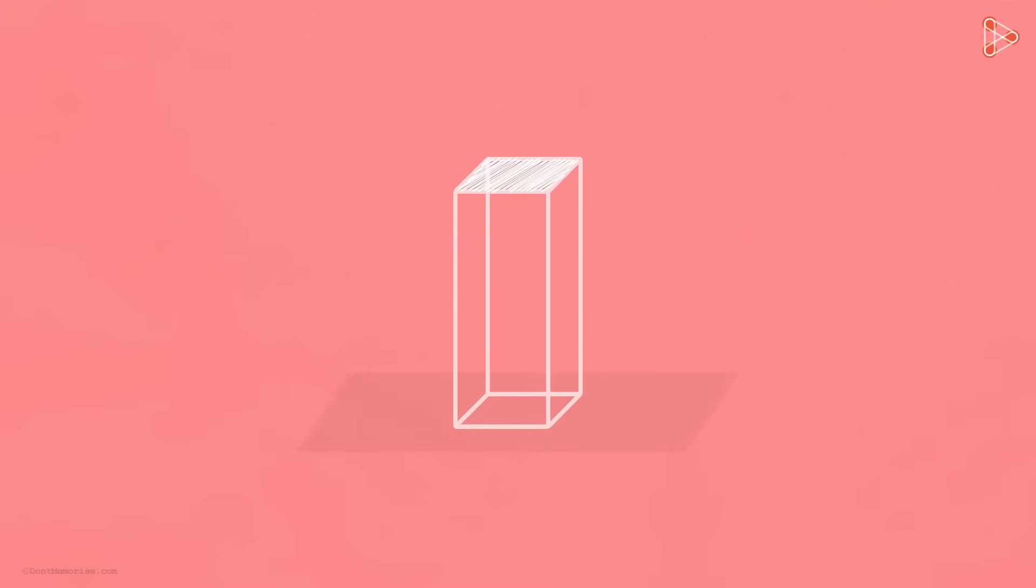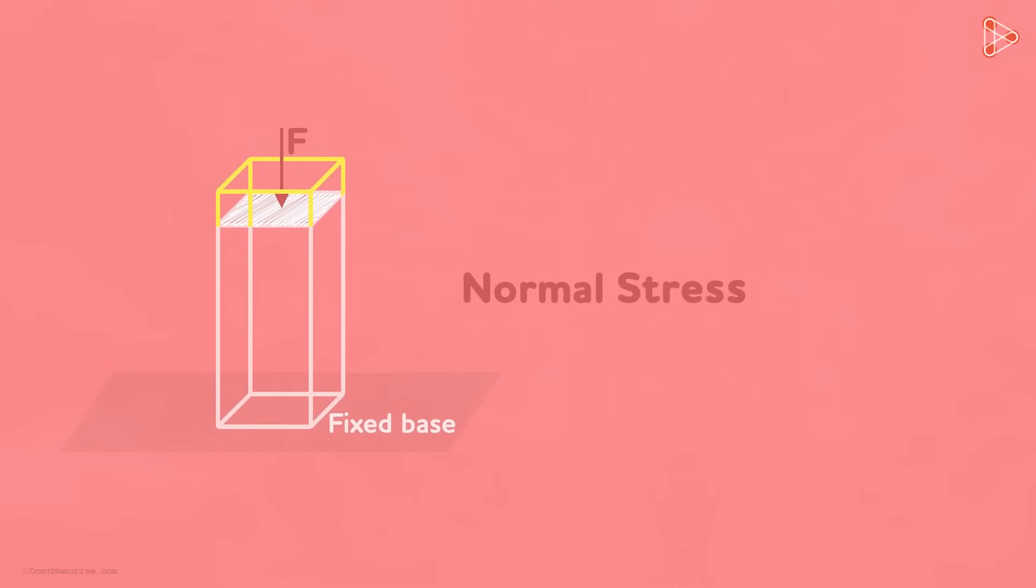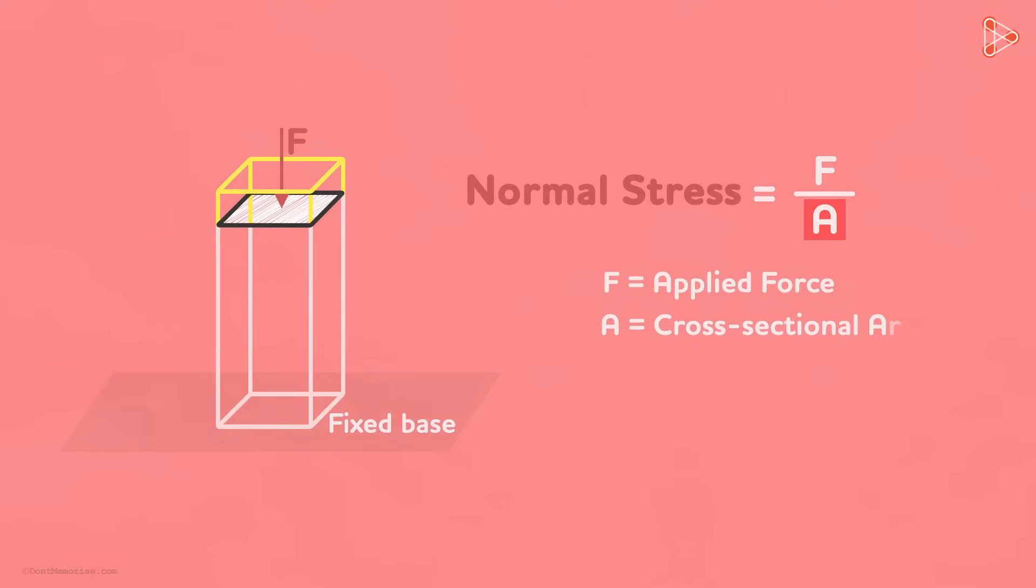Here is a beam and assume that it is fixed at its base. If we apply normal force to this cross-sectional area, then we know that the stress experienced by the beam will be normal stress which is simply given by F over A where F is the applied force and A is this cross-sectional area.